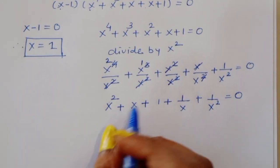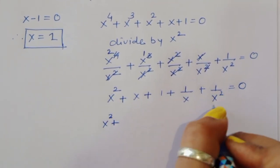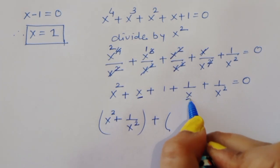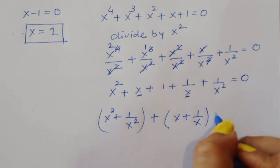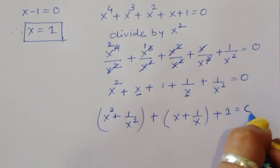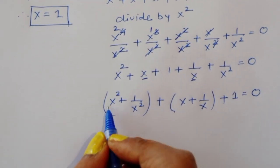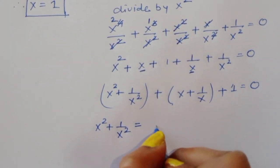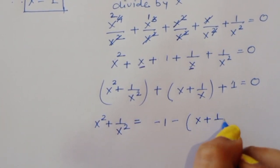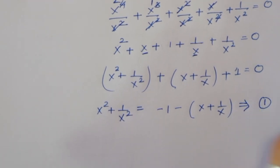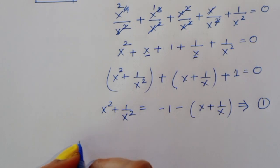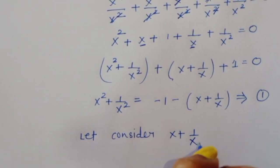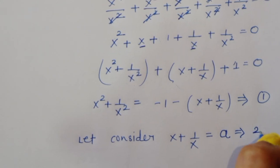Rearranging the terms: (x^2 + 1/x^2) + (x + 1/x) + 1 = 0. Now let's consider the substitution: let a = x + 1/x. This is equation number 2.